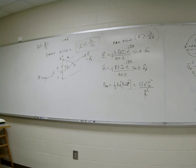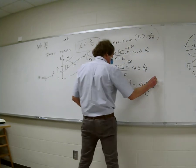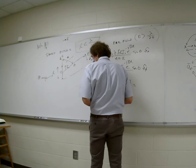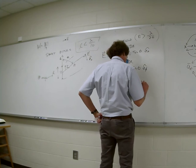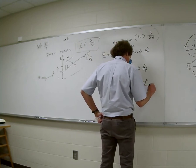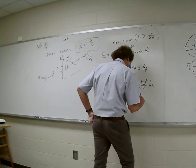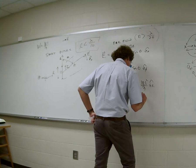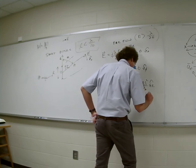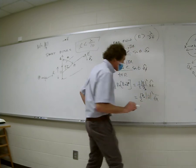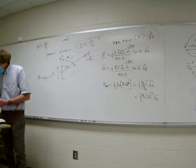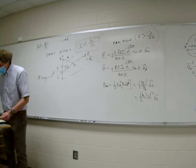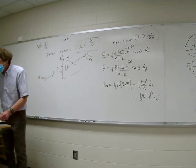I normally put the power density in terms of length over lambda. One way to write average power density is one-half times the magnitude of the E field squared over η in the A_R direction. You can also write it as one-half times η times the magnitude of the H field squared in the A_R direction. Either one will do. I think the specific formula is equation 8.76 on page 451.